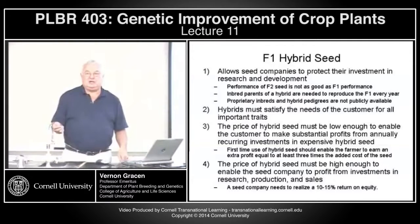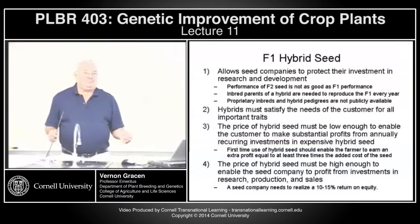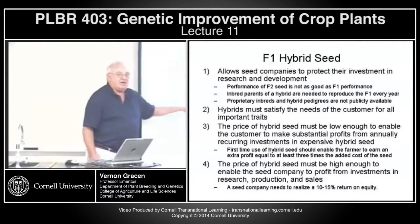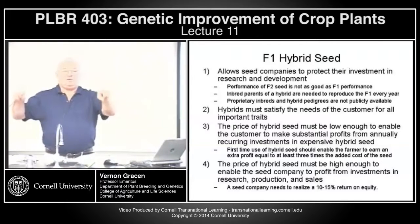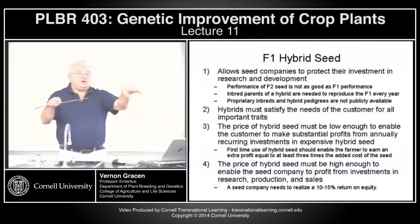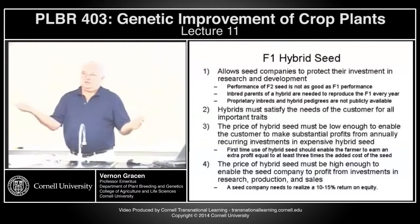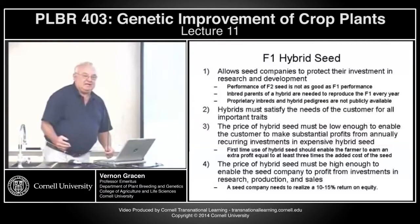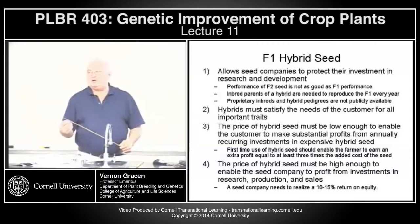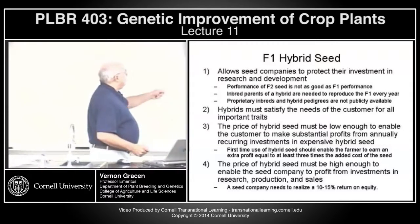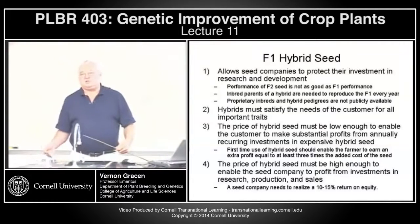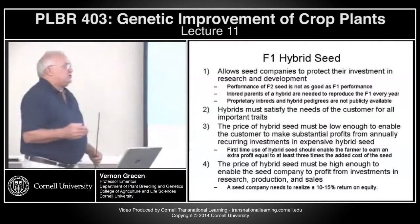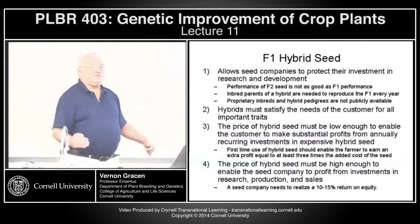The inbred parents needed to produce the hybrid are not publicly available. In the early years, the inbred parents were publicly available, but the pedigrees of the hybrids were not. A seed company could pick up two public inbreds, discover that they combined well to produce a lot of heterosis, and take those public inbreds year after year to produce a proprietary hybrid. But just giving the seed company protection didn't make the system go — the hybrids had to satisfy all of the traits for customers, and the price of hybrid seed had to be low enough for the farmer to see a clear advantage.